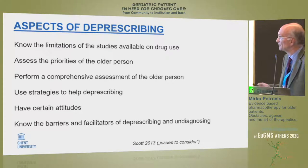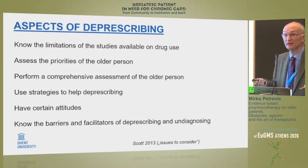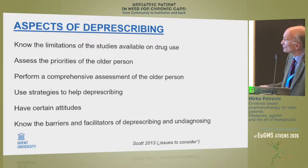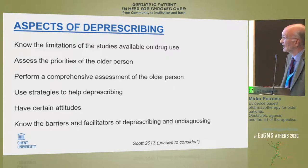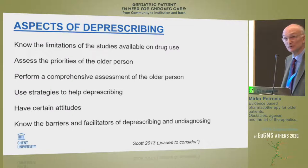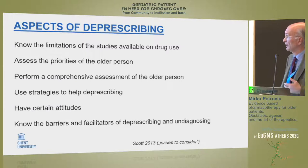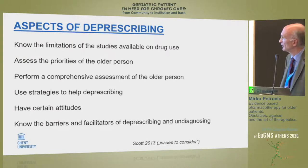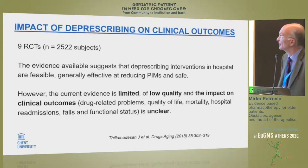What are the conditions for de-prescribing in an appropriate way? Because it is not blind de-prescribing — it is judicious de-prescribing. We should know the limitations of available studies on drug use. We have to assess profoundly the priorities of the older person, perform a comprehensive assessment, and use certain strategies to help de-prescribing. We must be really critical in a positive sense, analyze very profoundly the condition of the patient and their medication list, and know the barriers and facilitators of de-prescribing, including undiagnosing at very old age.